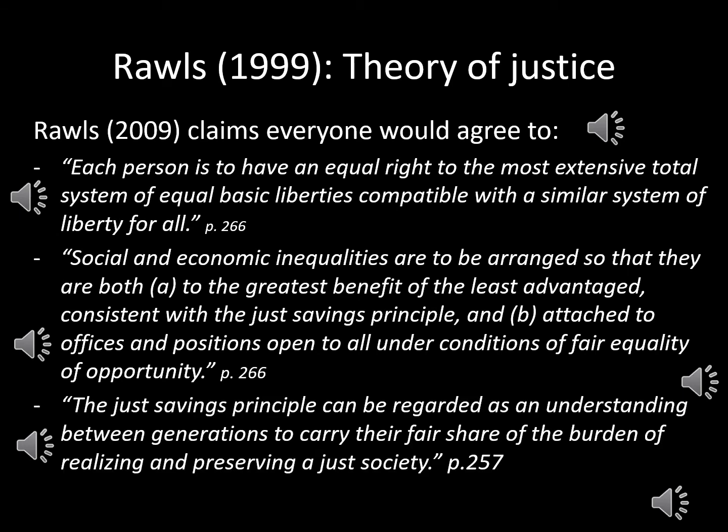This point (b) would banish kings and queens to the fairy tales where they belong. For a clarification, Rawls elaborates that the just saving principle can be regarded as an understanding between generations to carry their fair share of the burden of realizing and preserving a just society. Which institutions would you like to reshape from behind this veil of ignorance, and whom did you include in your abstraction? Did it include other species as well?